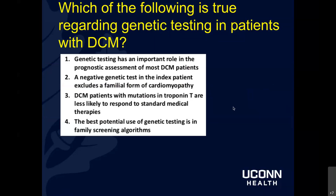A question regarding genetic testing in dilated cardiomyopathy: which of the following is true? Genetic testing has an important role in prognostic assessment of most dilated cardiomyopathy patients? A negative genetic test excludes a familial form? Dilated cardiomyopathy patients with troponin T mutations are less likely to respond to standard medical therapies? Or: the best potential use of genetic testing is in family screening algorithms? The answer is option four.